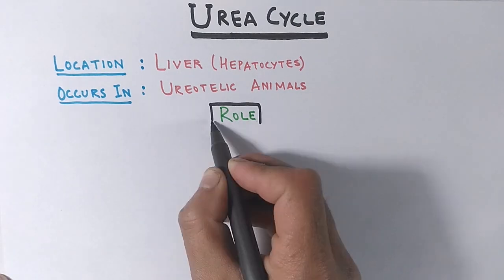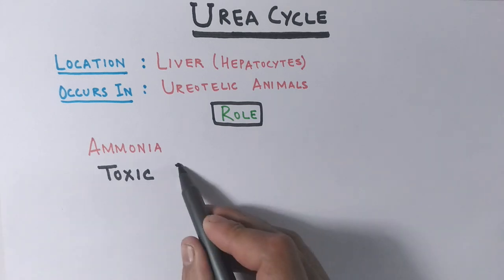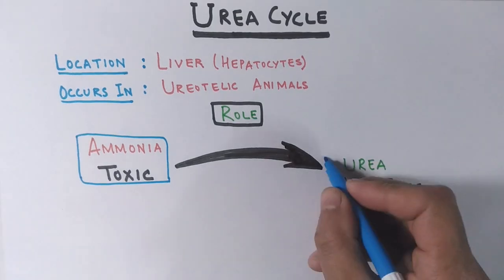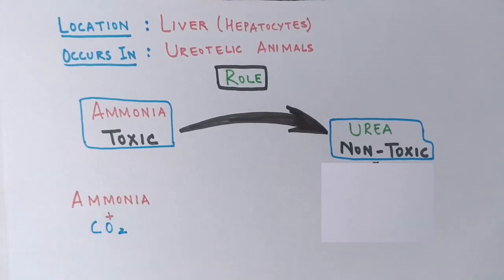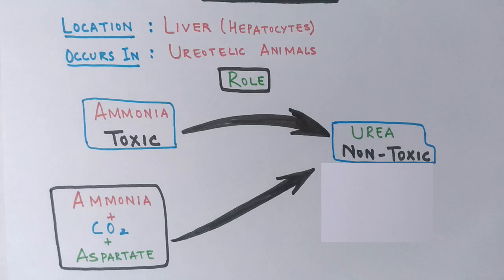The basic role of the urea cycle is to convert toxic ammonia, produced in our body, into urea, which is non-toxic and can be eliminated easily without excess dilution, thus conserving water. In the overall reaction, ammonia combines with carbon dioxide and aspartate (aspartic acid) to give the product urea, with energy invested from ATP molecules.